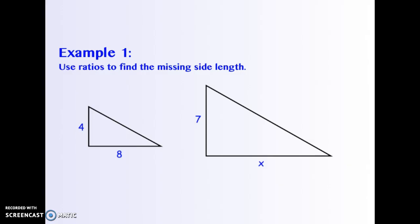For instance, if you have these two similar triangles, one has a height of 4 and a base of 8, and the other one has a height of 7, and you're trying to figure out the base.